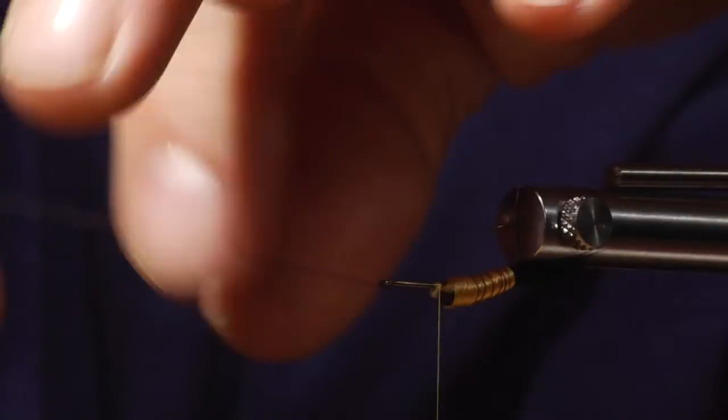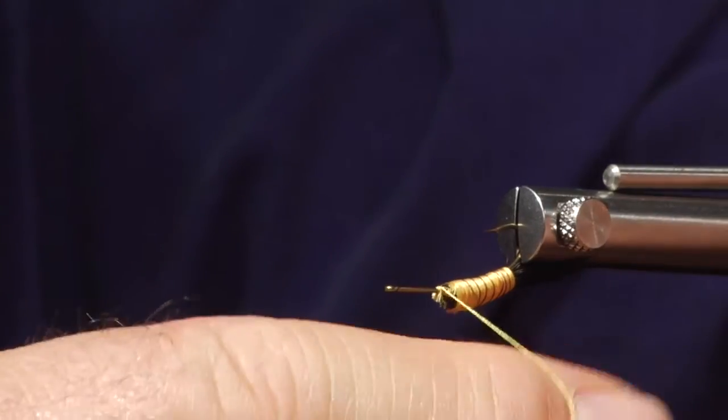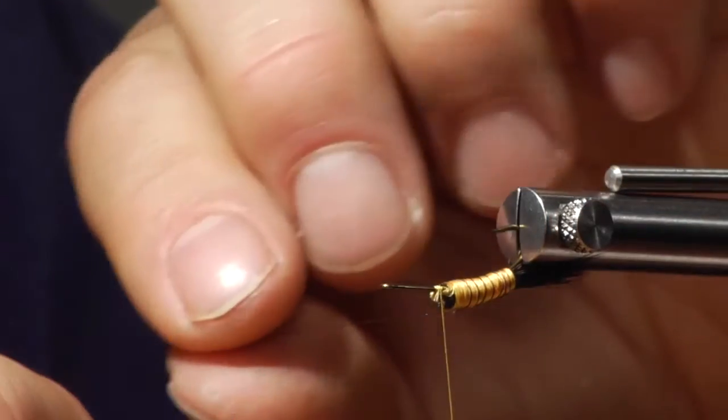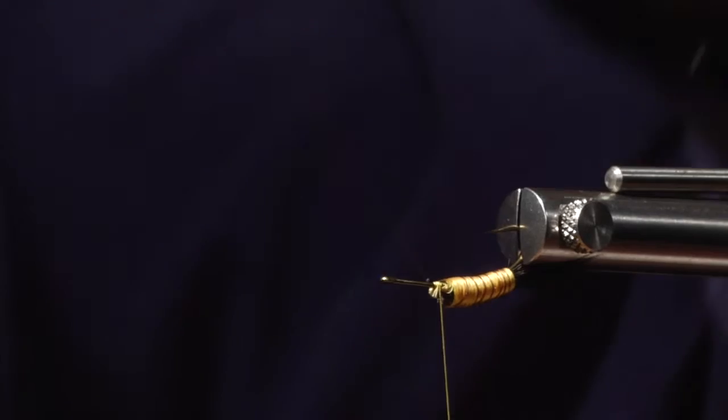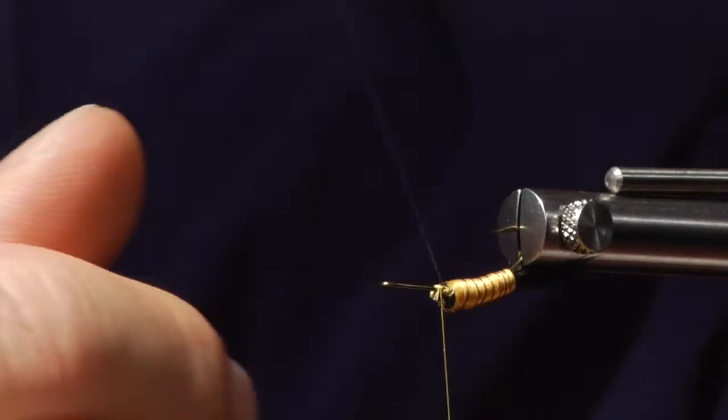The other thing I like about this pattern is that it has no foam and it has no rubber, which is a rare commodity these days, I think, especially for fishing large stoneflies.